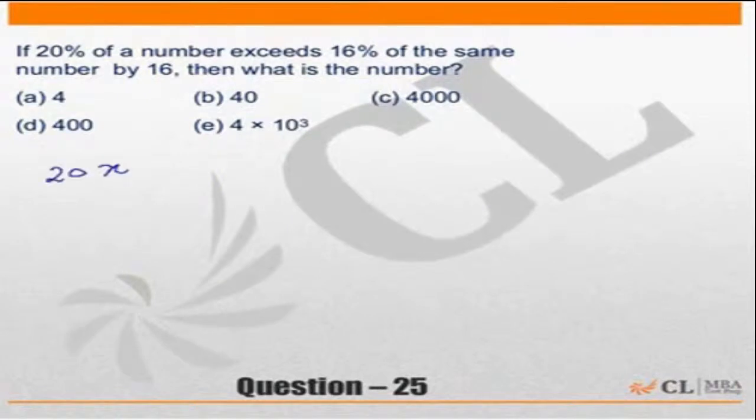So 20% of the number will be 20x upon 100 and 16% of the number 16x upon 100 is equal to 16. Not a difficult calculation.